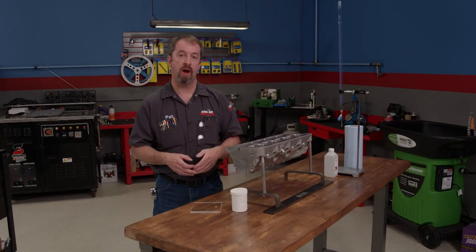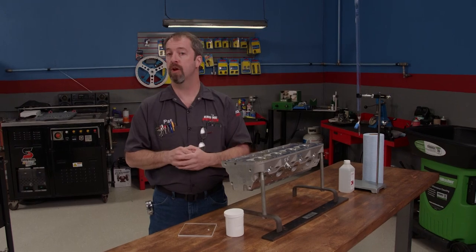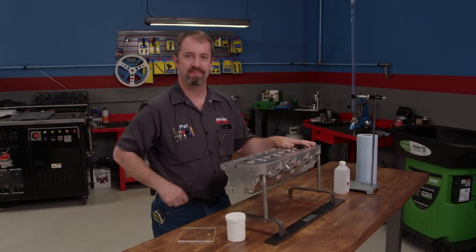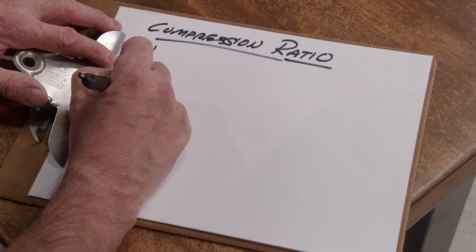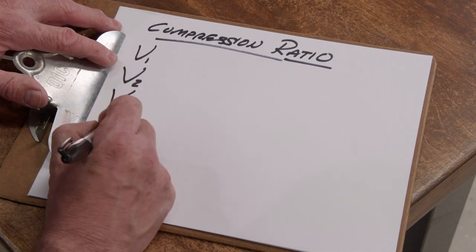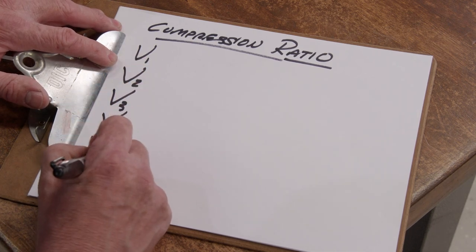Recently we discussed compression ratio and how it affects performance. Today we're going to show you how to calculate compression ratio for your own power plant. To determine compression ratio we must make five volume measurements. To keep things organized we'll record each one on a sheet.